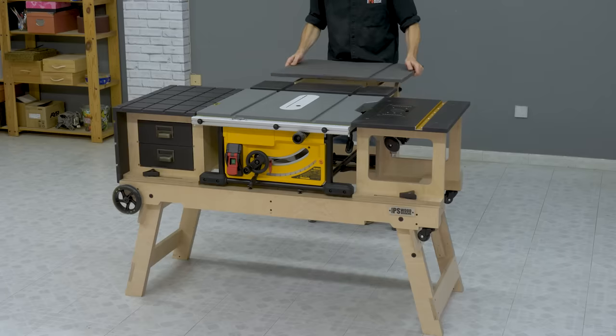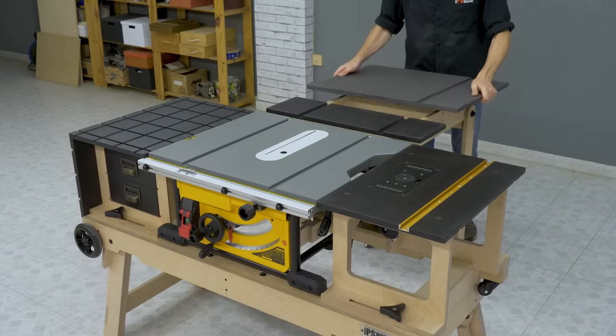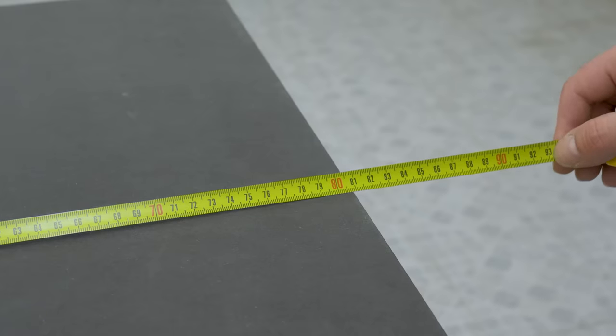On top of the table I'm going to place the black MDF piece, which I'll use in the next video to make the crosscut sled. When this project is done, I'll have an outfit table that's 80 centimeters deep.